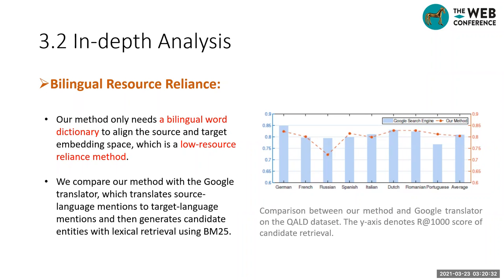Our method only needs a bilingual word dictionary to align the source and target embedding space, making it a low-resource method. We compare our method with Google Translate, which translates source language mentions to the target language and then generates candidates using lexical retrieval. We found that our method achieves comparable performance with Google Translate.